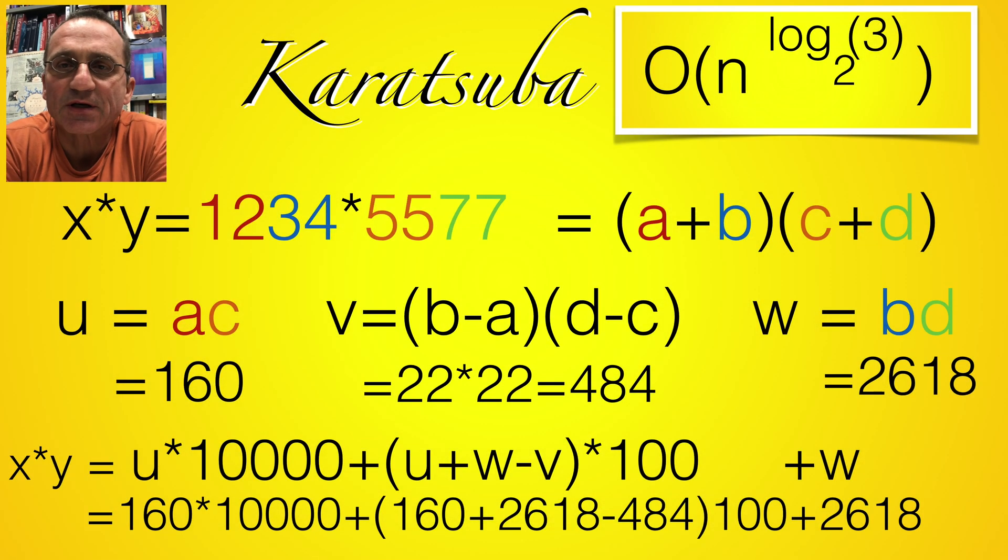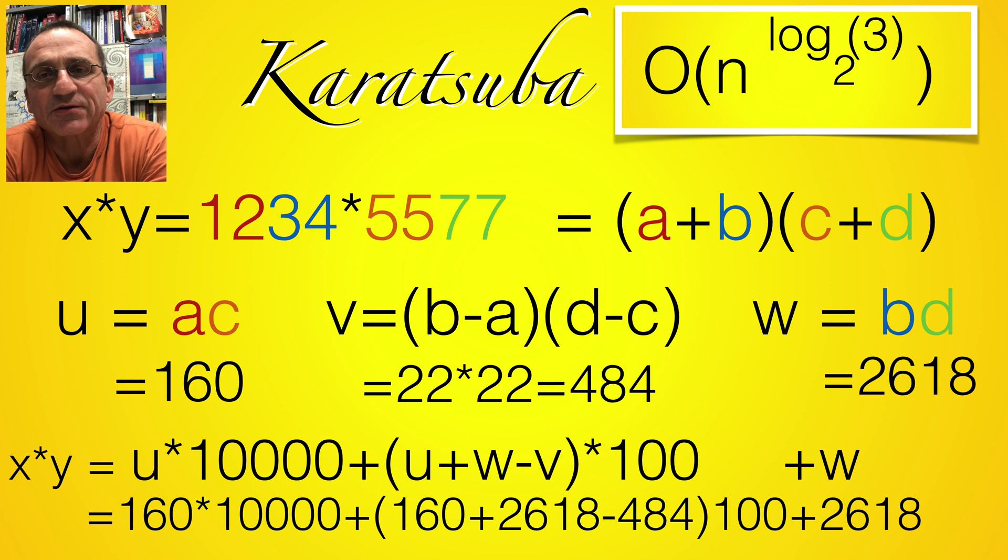One can do better. A simple trick is to split the number into two parts, then foil out the product and rearrange to use three instead of four multiplications.